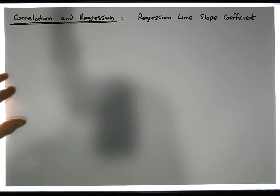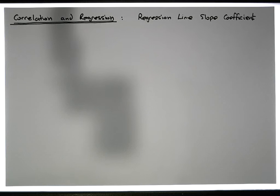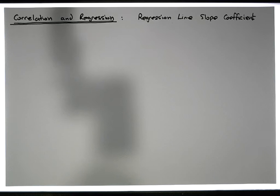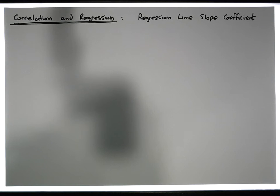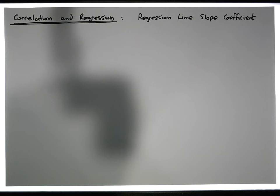This is something I promised when we derived the intercept and the slope for the regression line. When I did the video for the regression line derivation — for the slope and the y-intercept — we had a single independent and single dependent variable, but I did promise I would follow that up with the sigma notation form for the slope of the line.